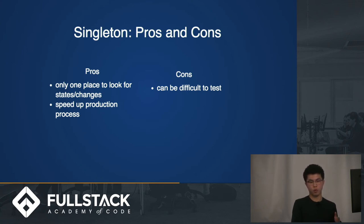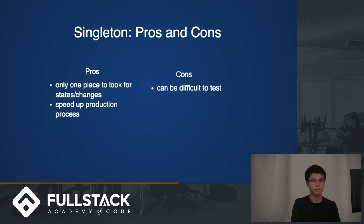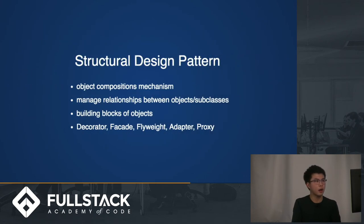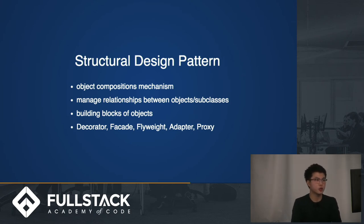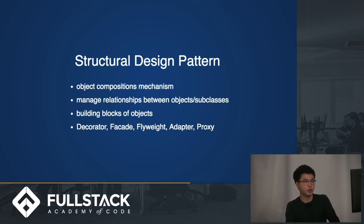However, Singleton can be really difficult to test, because the singleton object won't know where to send out these functions since it won't know anything about the observers. The second category is structural design patterns, which concern how to best manage the relationships between different objects — the building blocks and how they support each other. Some examples are decorator, facade, flyweight, adapter, and proxy.